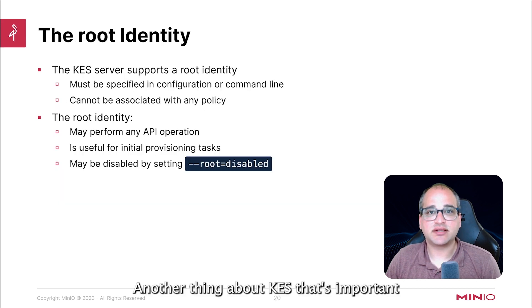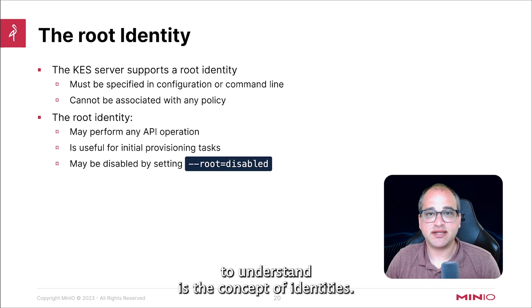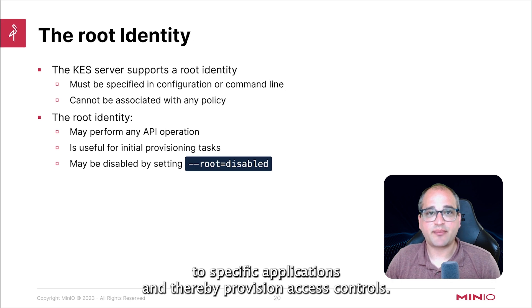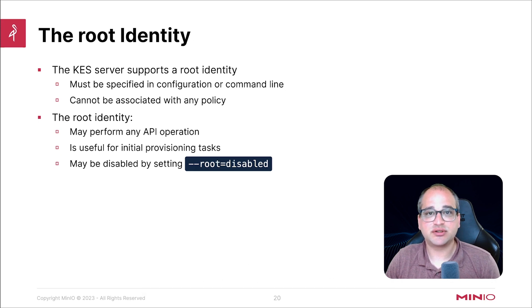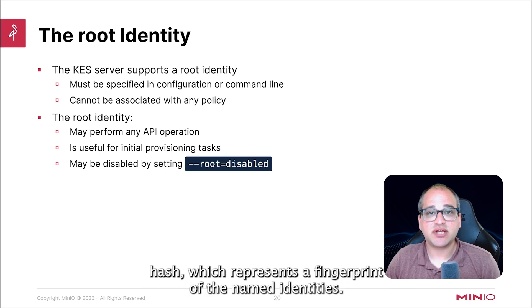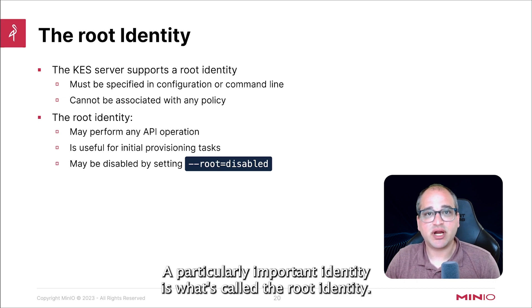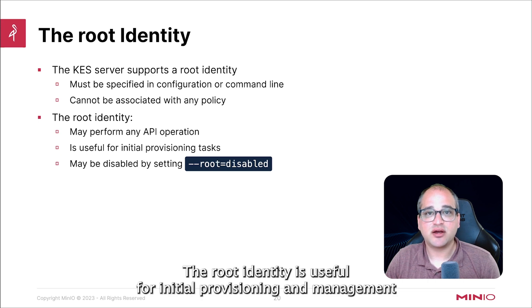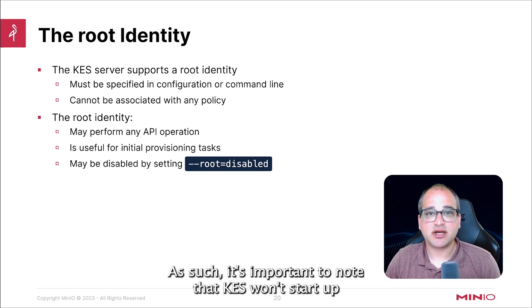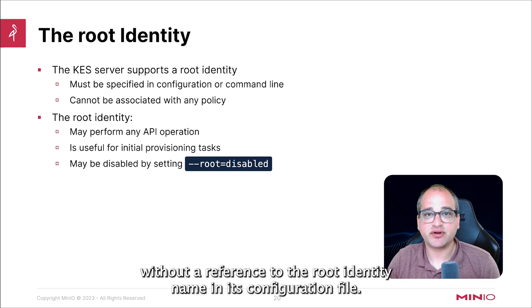Another thing about KES that's important to understand is the concept of identities. Identities are what allow us to map policies to specific applications, and thereby provision access controls. Identities are generally referred to by a SHA-256 hash, which represents a fingerprint of the named identity's metadata. A particularly important identity is what's called the root identity. The root identity is useful for initial provisioning and management tasks, and can perform arbitrary API operations. It's important to note that KES won't start up without a reference to the root identity name in its configuration file.